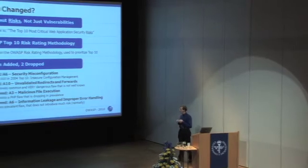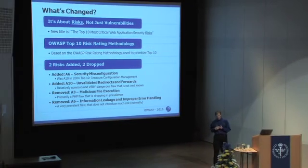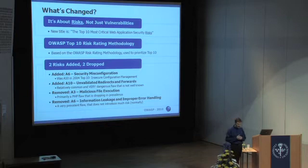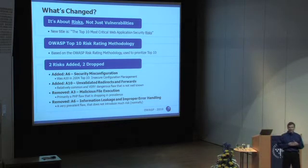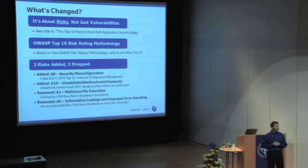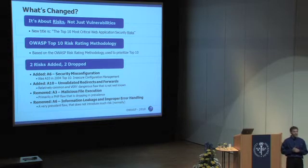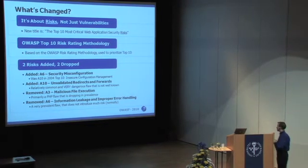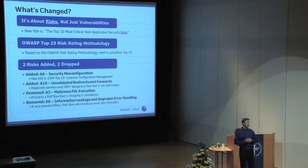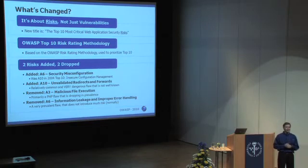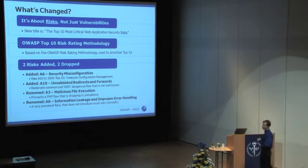What did we do this year in the top ten that we hadn't done before? A little history: we first published it in 2003, and we were quite amazed at the amount of attention that document got. The OWASP website went down the day we published it because it got slashdotted and our server couldn't handle it. We did an update in 2004, then 2007, and finally this update in 2010. Every three years is a good tempo.